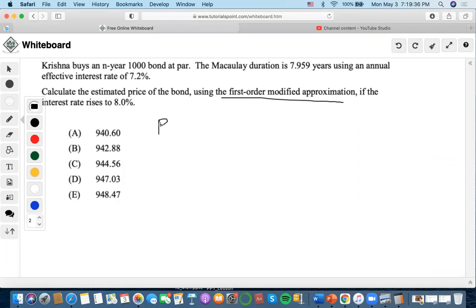So the equation is the price of the bond, 1 minus the new interest rate minus the old interest rate times mod D, right? That is the equation for first-order modified approximation.